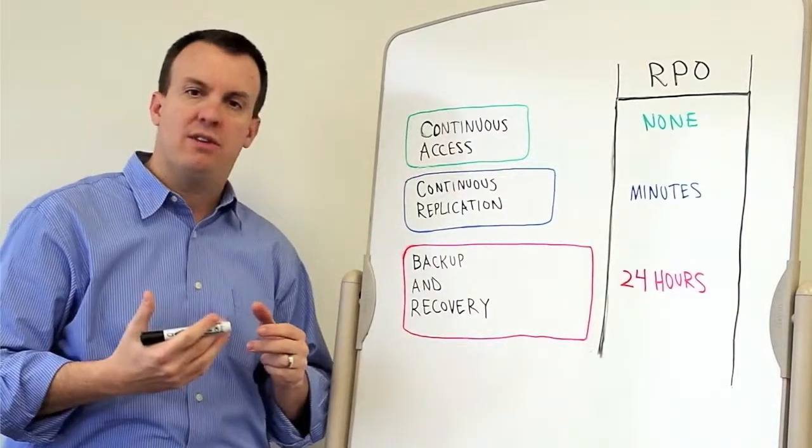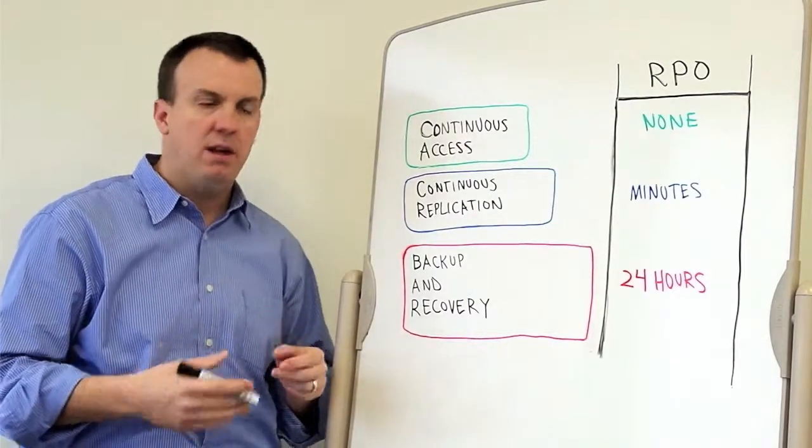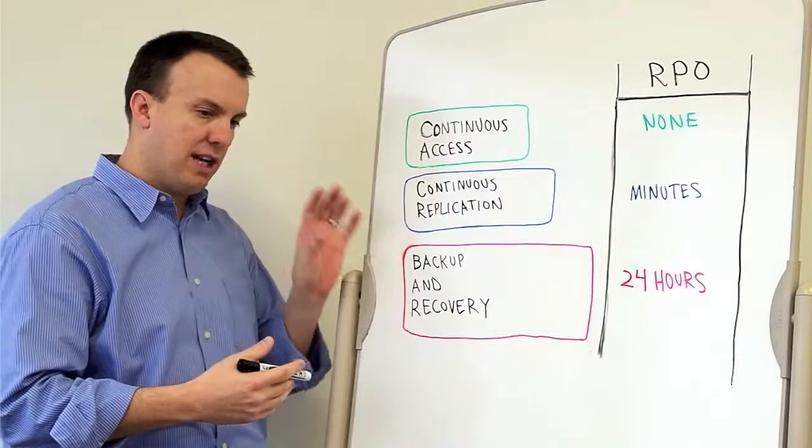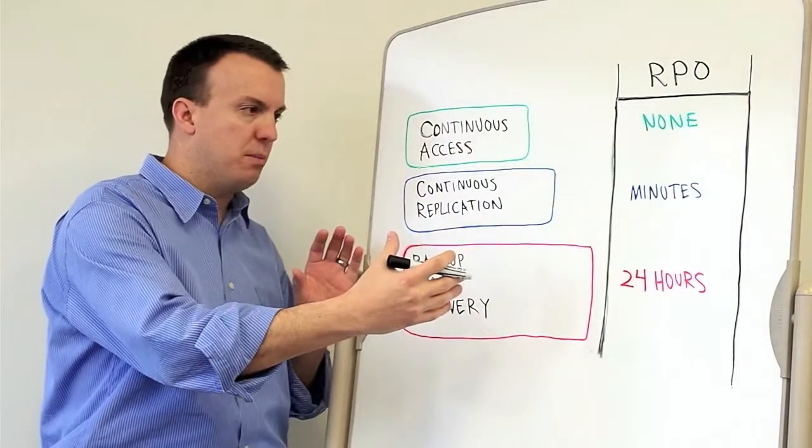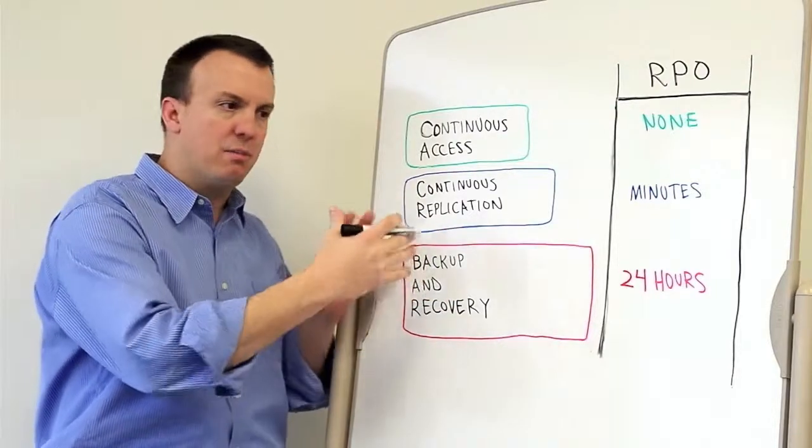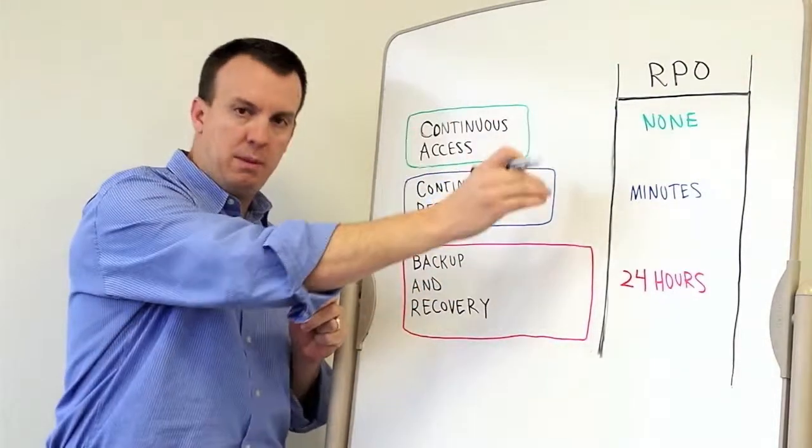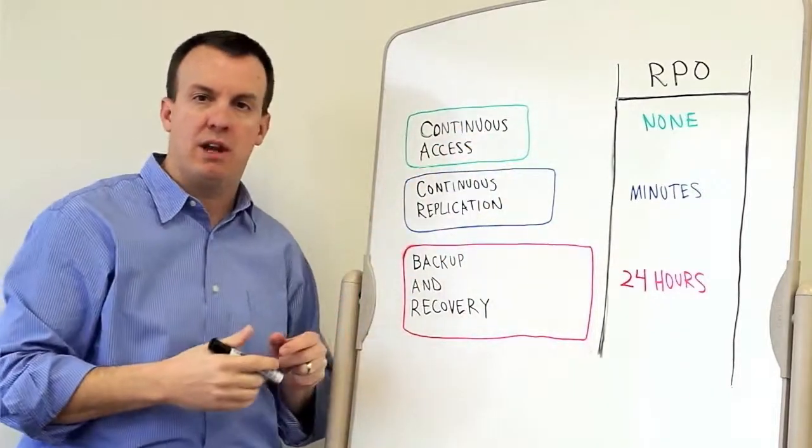A step up from that is continuous access, and this is enabled through a product that we call VPlex. VPlex lets people take a data center and stretch it across multiple sites to enable a geographically dispersed storage volume, which a cluster could be placed on top of to be able to fail that over automatically.